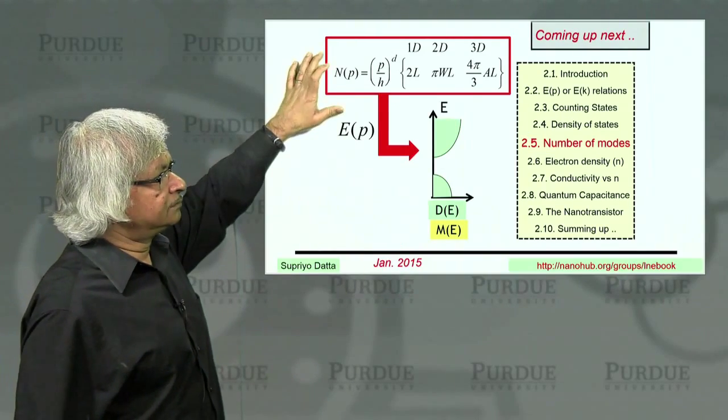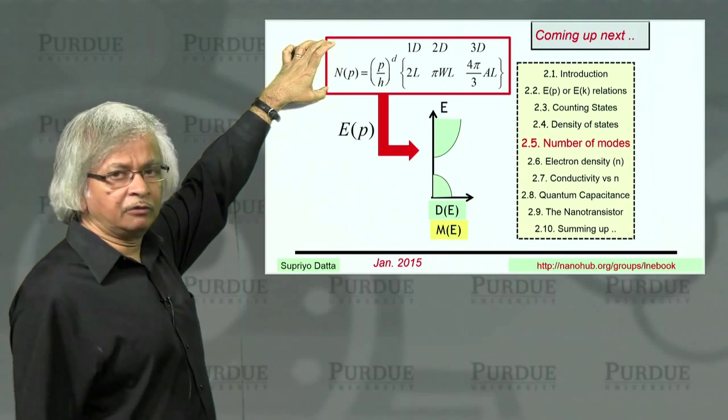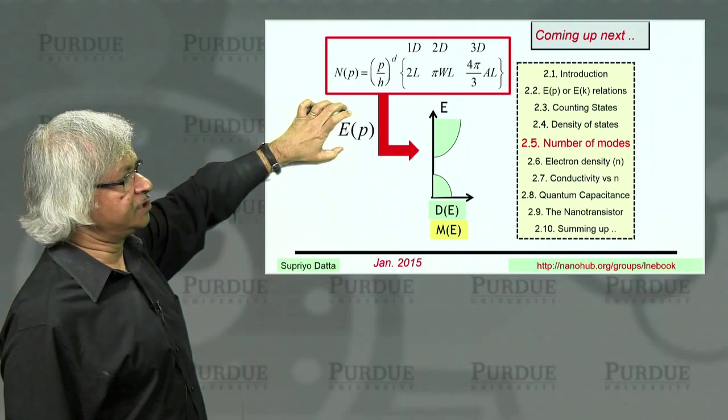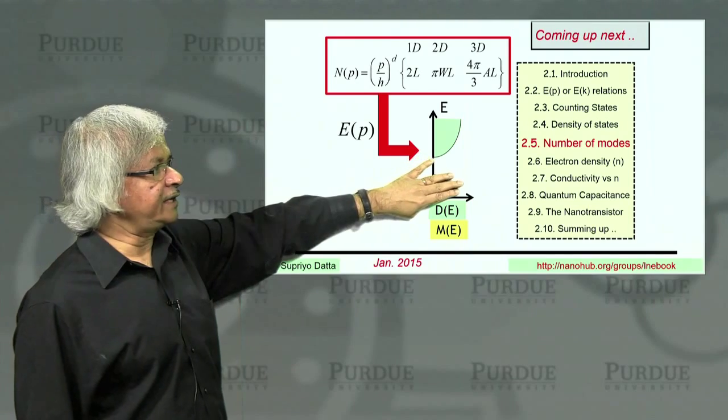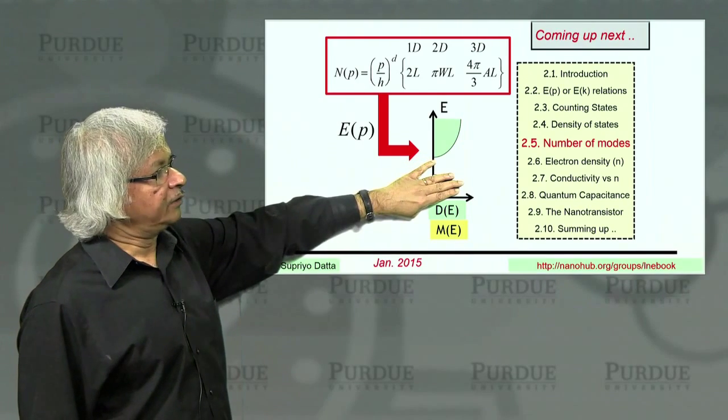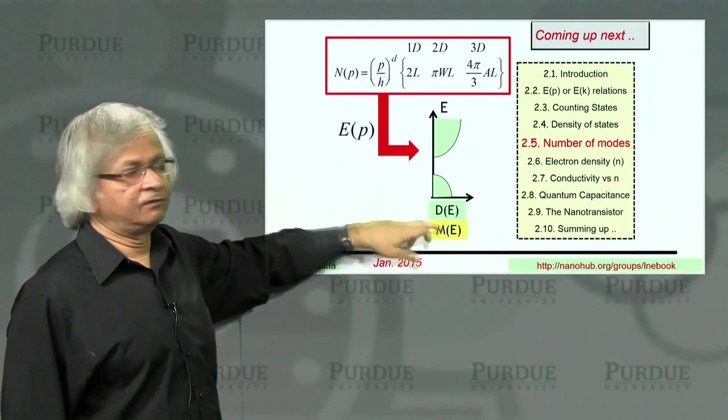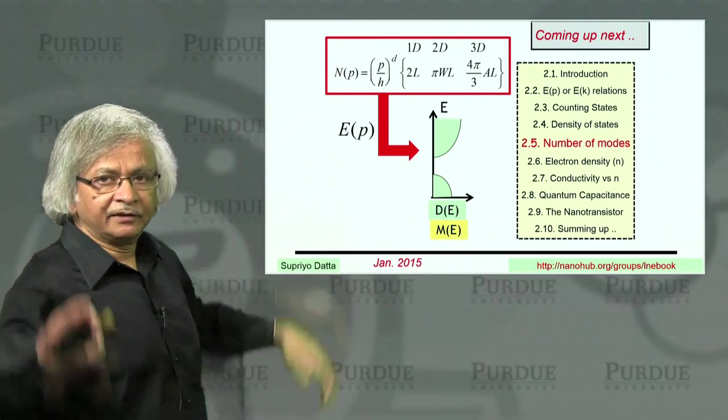I think we're done here with what we're trying to do, namely start from this rule for counting states that we got from the third lecture, combine it with the energy-momentum relation to get a density of states. What we'll now talk about next is how you get the number of modes from this N of p. Thank you.